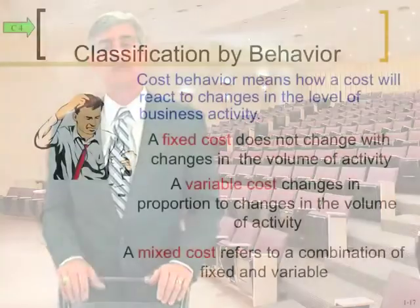Likewise, the manager of the apartment unit doesn't care if the month has 28 days like February or 31 days like January — your monthly rent is still the same. So we had two levels of activity, and the rent didn't change even though the levels of activity changed. A variable cost, on the other hand, is one that changes in proportion to changes in the level of activity. For example, if I buy gasoline, the total amount I spend depends on how many gallons I buy. Therefore, gasoline is a variable cost.